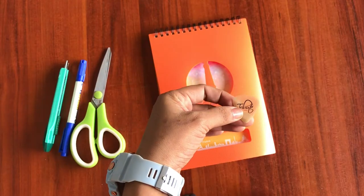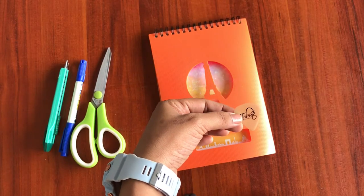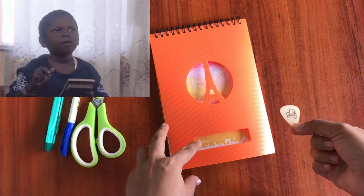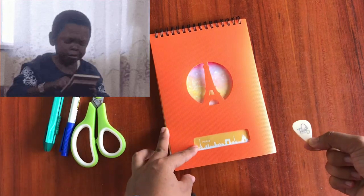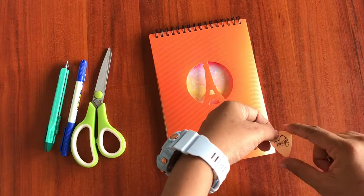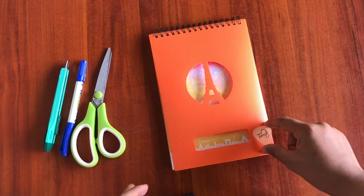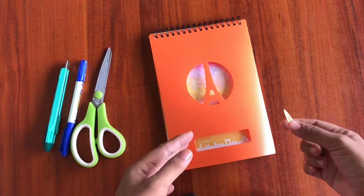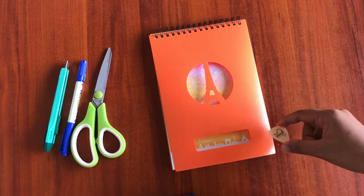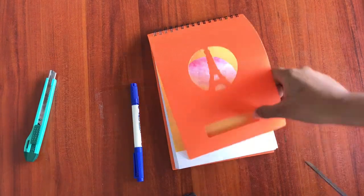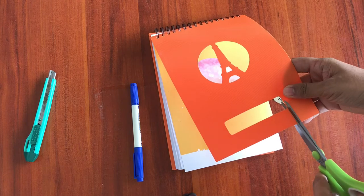This is the guitar pick that I usually use. Because I want to have the same shape as my old one, I will cut this into the same shape. If you don't have one, you can make whatever shape you want. First, let us cut a small piece from this.